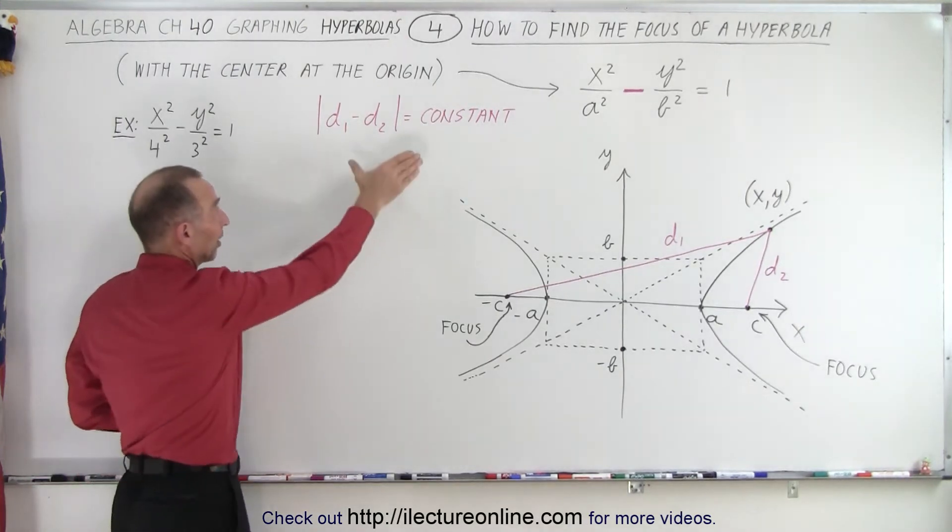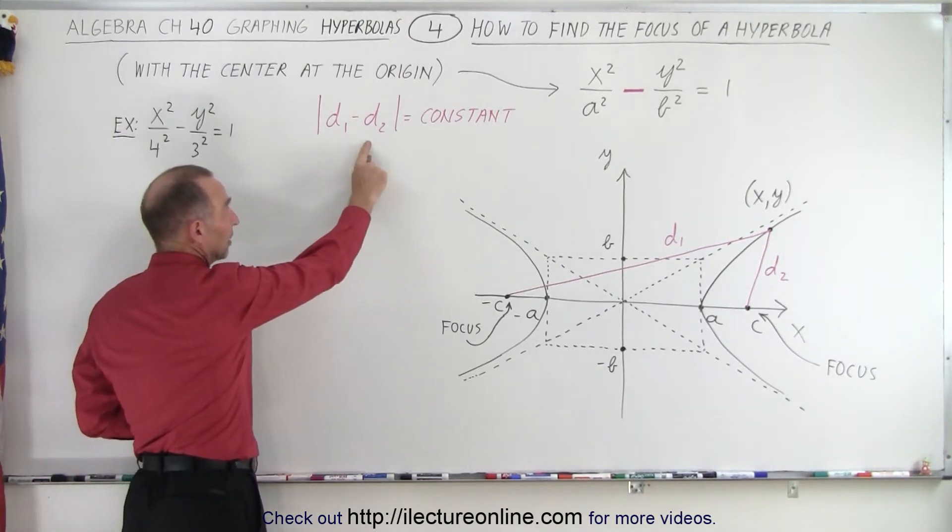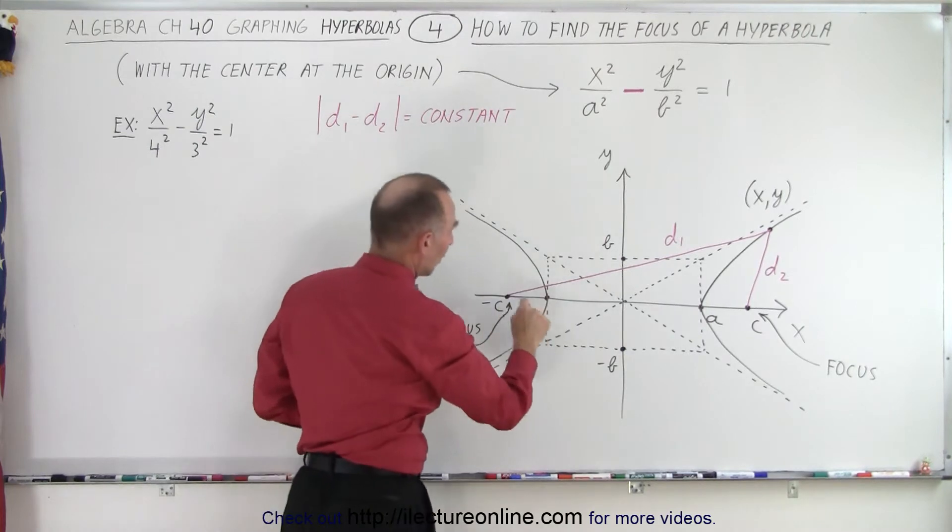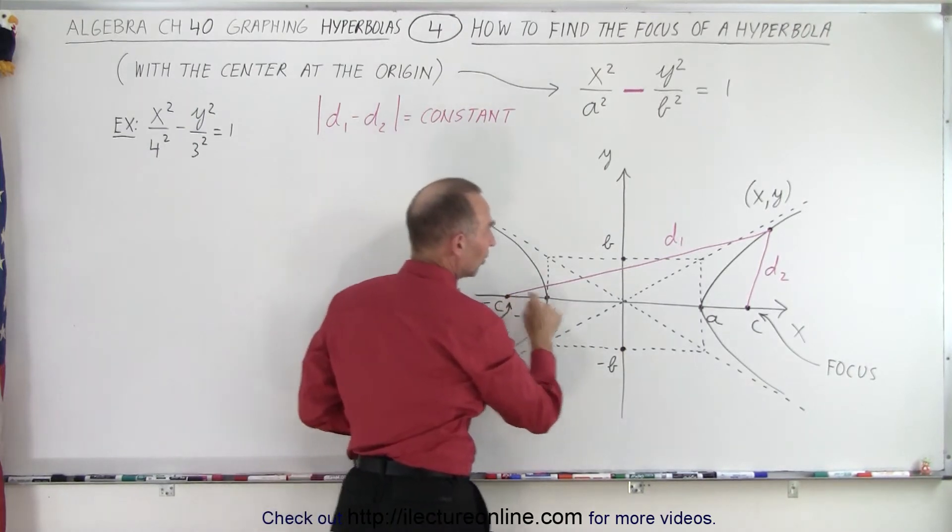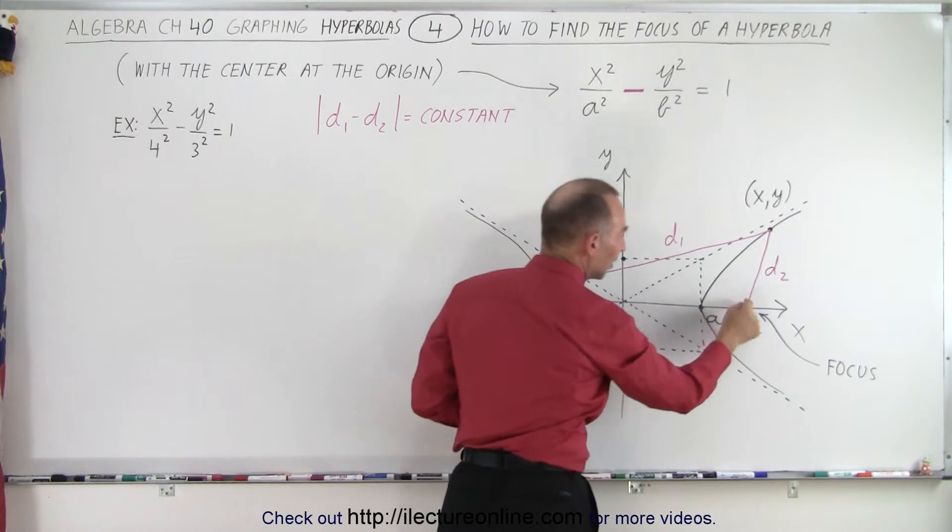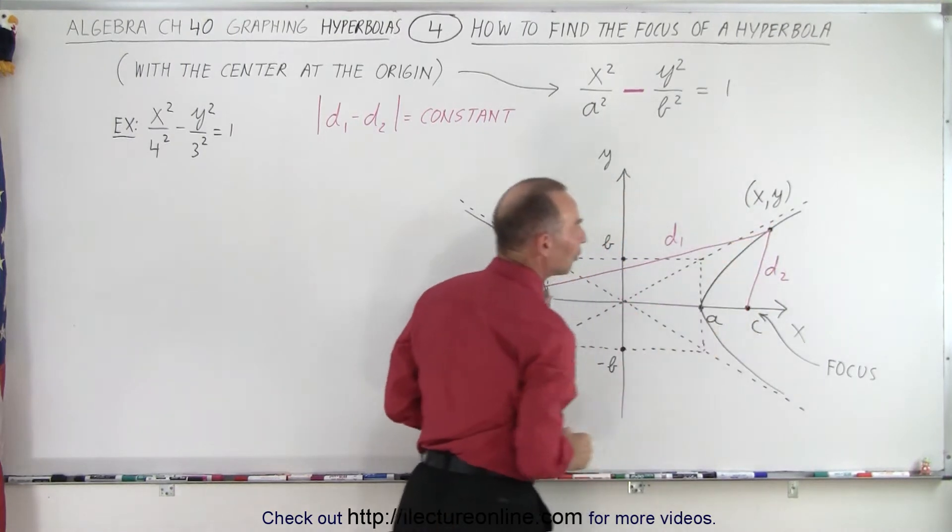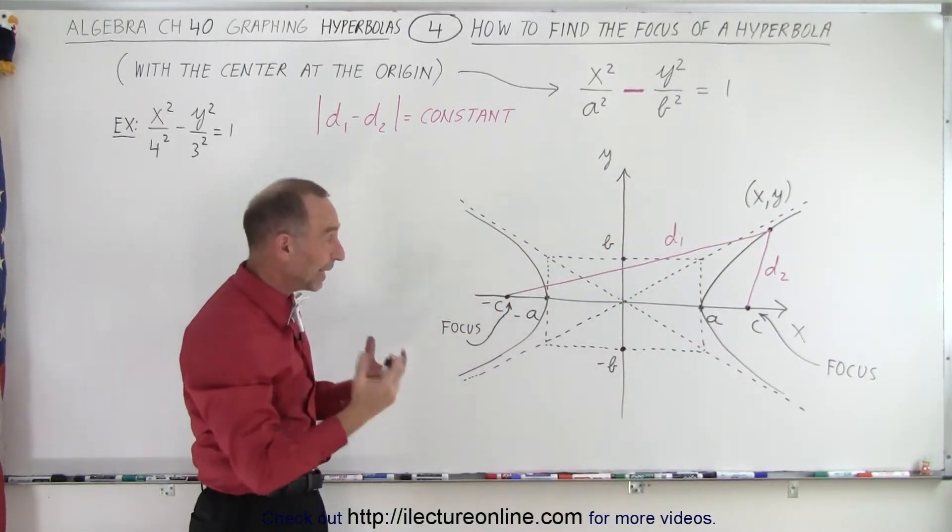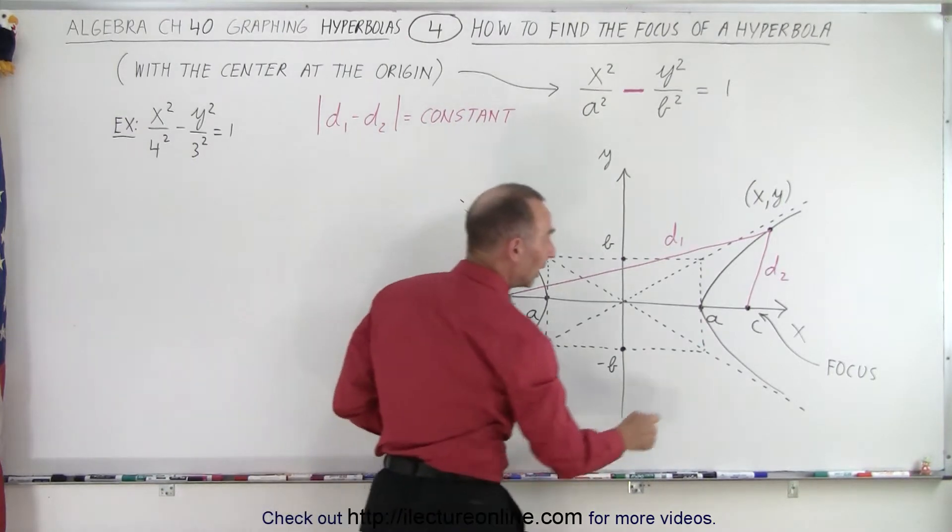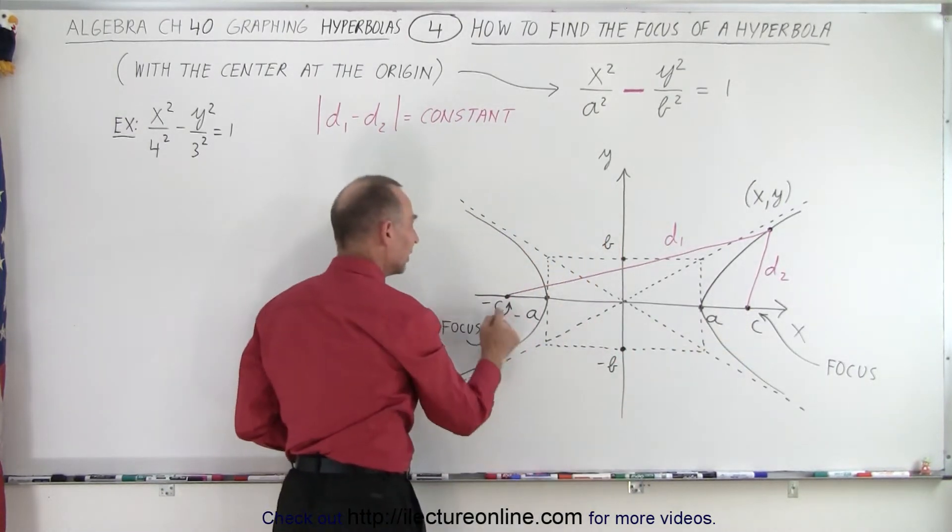The same constant, and so that's what we're saying here: that d1 minus d2 equals a constant, where d1 is the distance from this focus to that point on the hyperbola and from this focus to that point on the hyperbola. Notice that we placed the two foci, one at plus c and the other one at negative c.